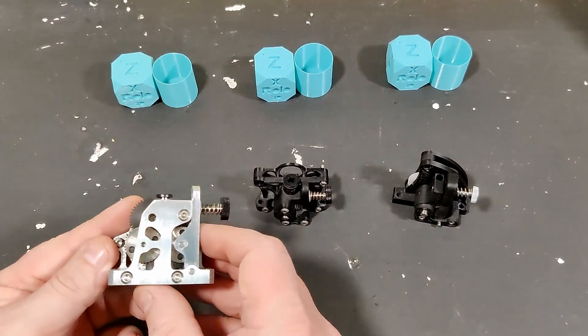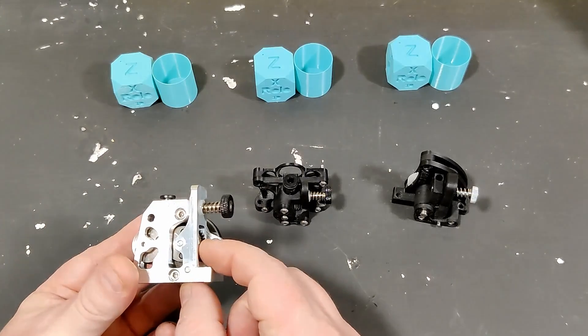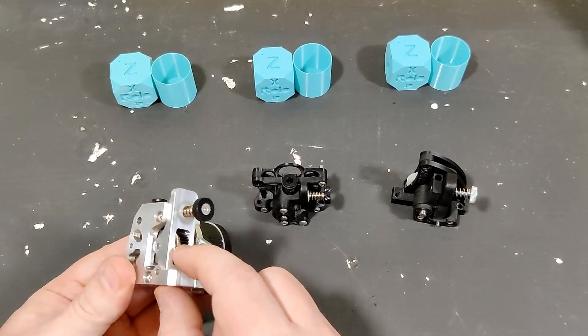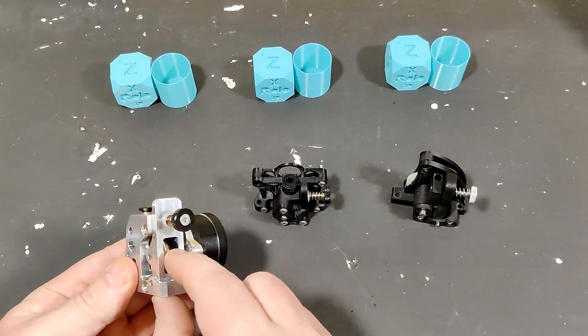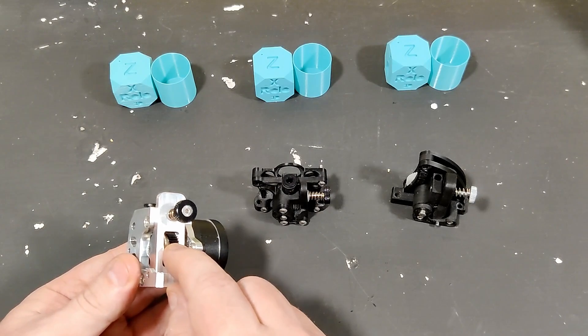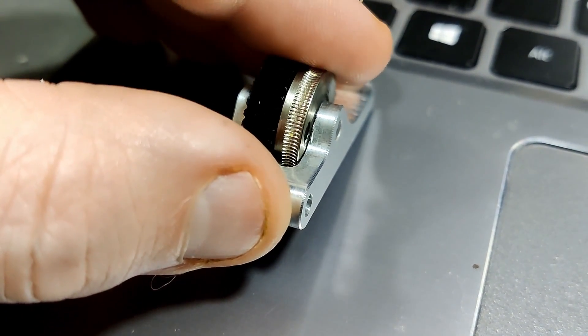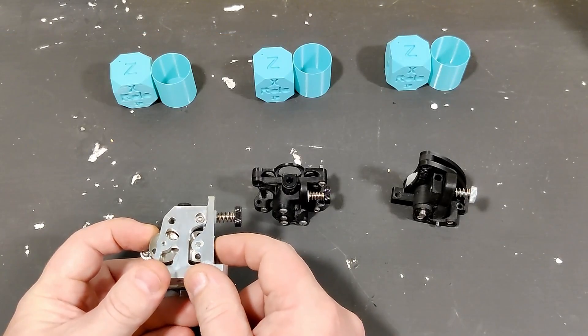So I took it all apart and it turns out that my tooth idler right here was missing its bearing. So it was super loose and I'll show you a quick little clip that I did. It would bind just randomly when printing.